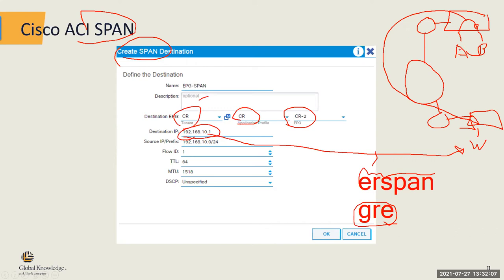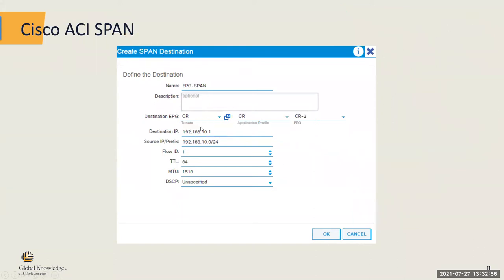The traffic from A to B will be encapsulated in a GRE tunnel to wherever you direct it. That destination could be in the data center, out of the data center, or around the world — as long as there's IP connectivity. A trivia question: how many IP addresses will be in a single monitored packet? The answer is four: one source and one destination from the original A-to-B traffic, plus the two tunnel endpoint addresses from the ERSPAN GRE tunnel. You'll see four IP addresses as a result of doing SPAN in ACI based on a tenant and EPG.